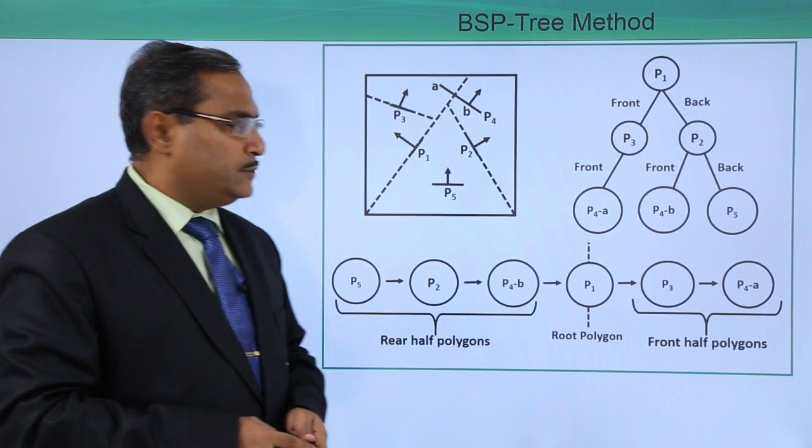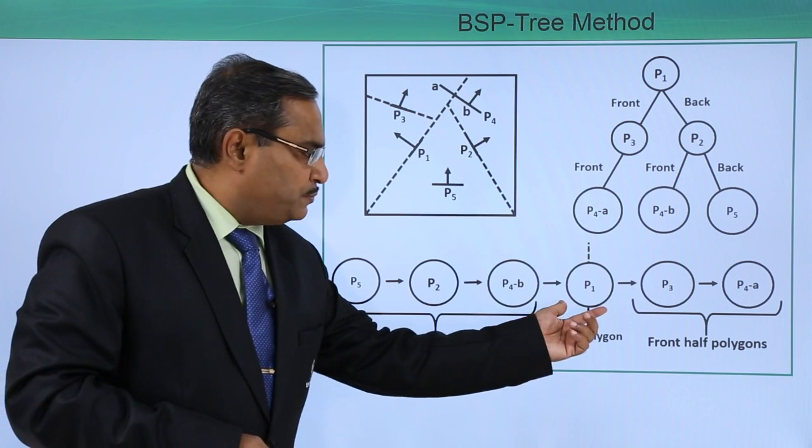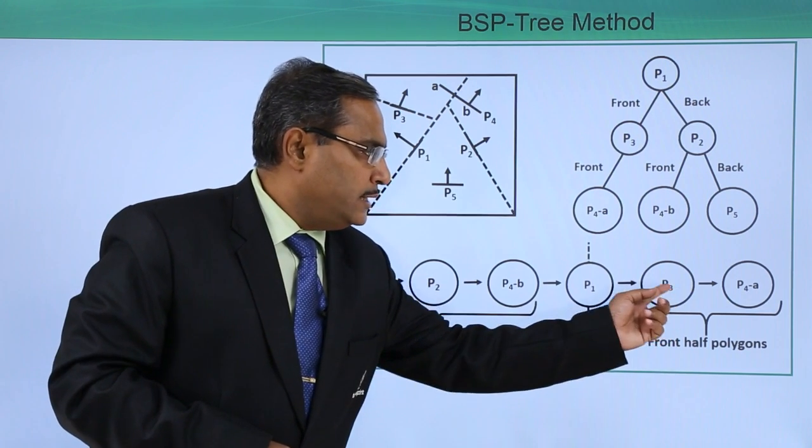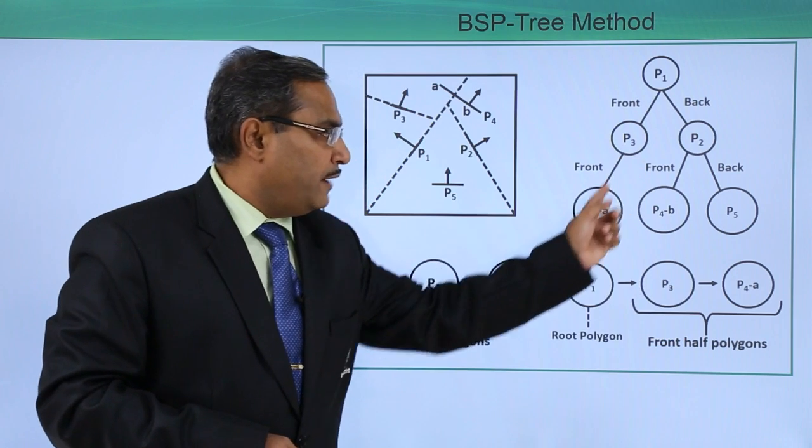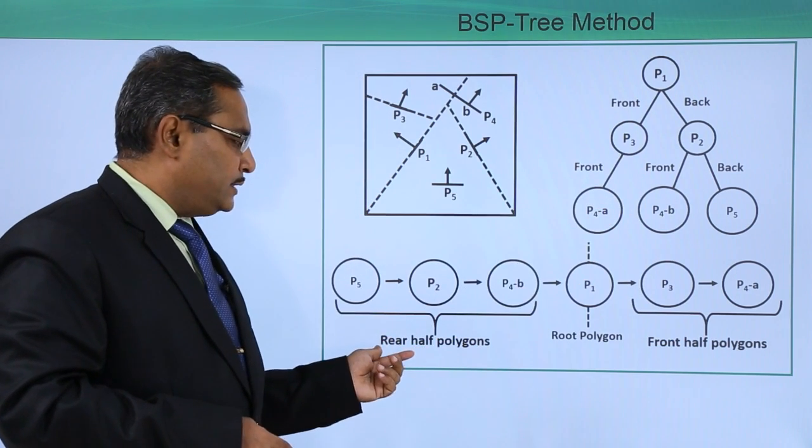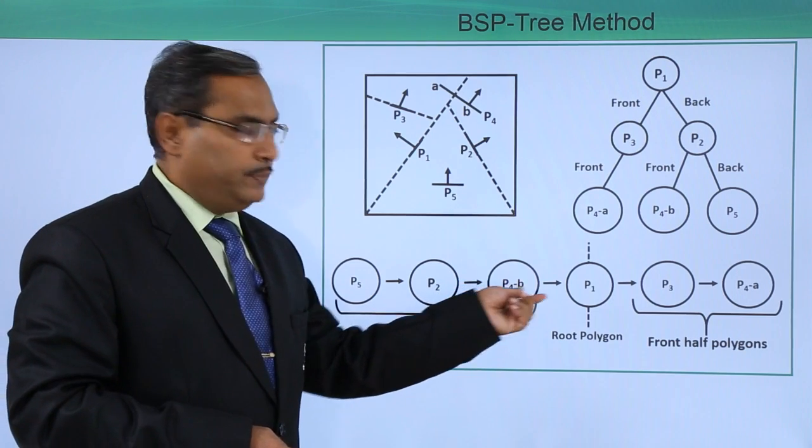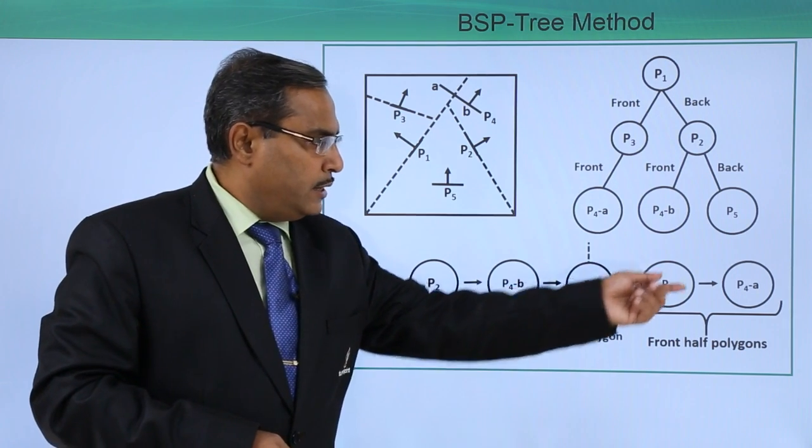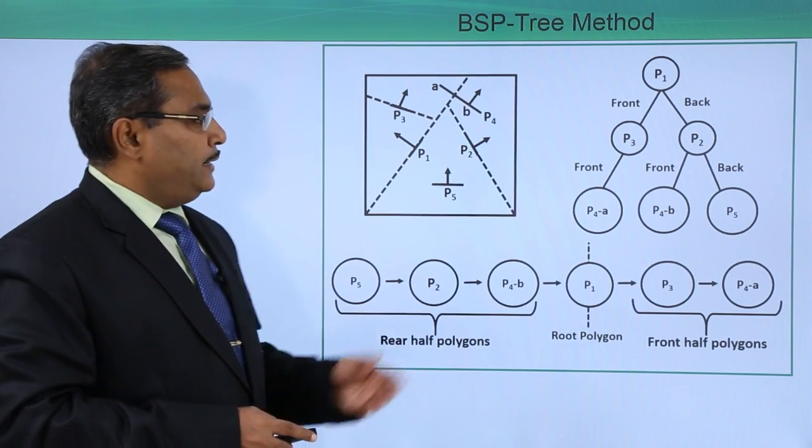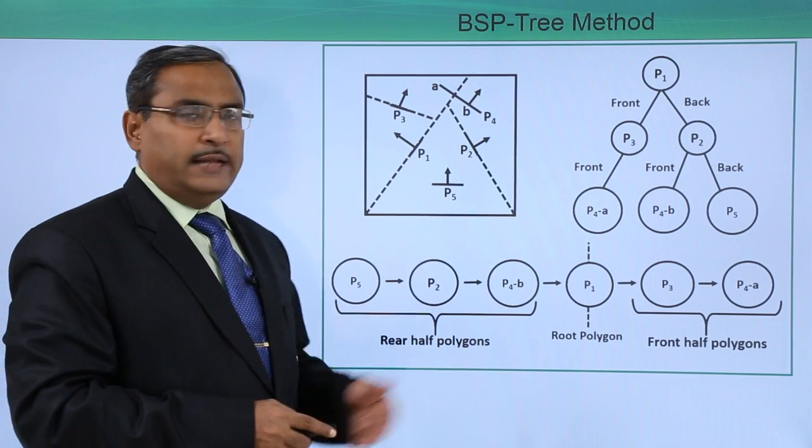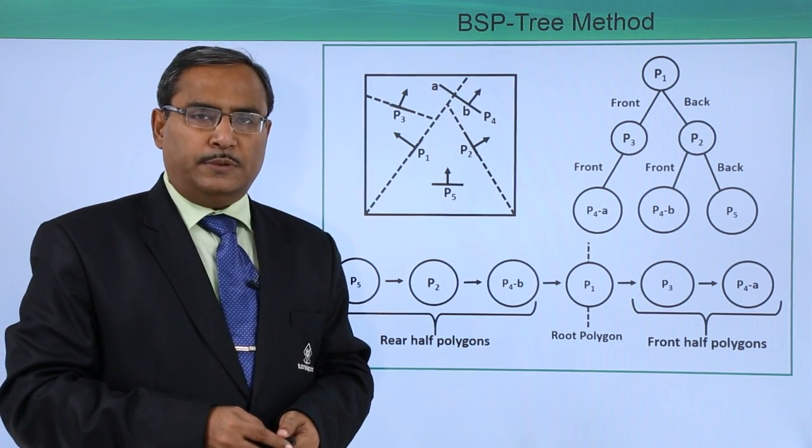In this way, the BSP tree has been formed. If you consider P1 as the root polygon, here we are having front half polygons, that is P3 and P4a, and here we are having rear half polygons, that is P5, P2, P4b, then P1, then P3, then P4a. So in this way, how the BSP tree algorithm is executing, we have explained with a proper example.